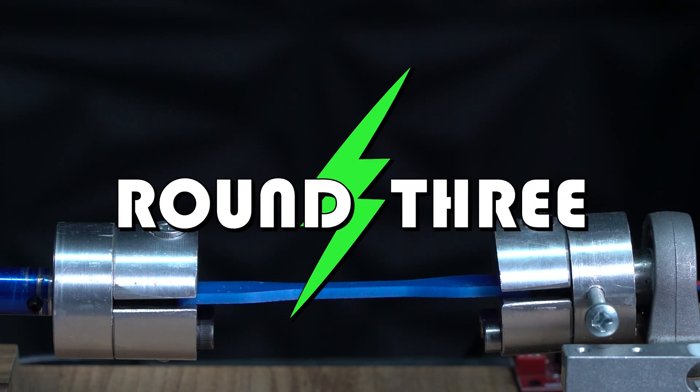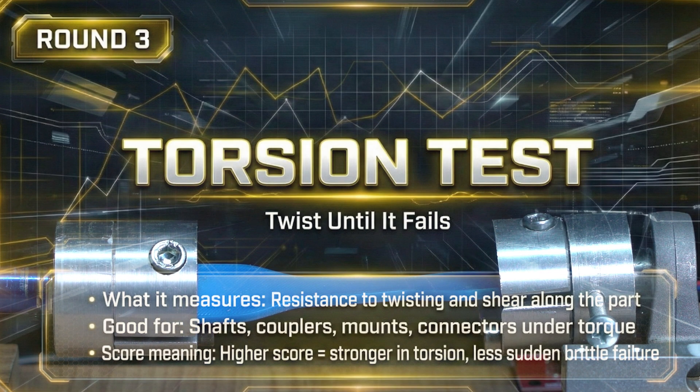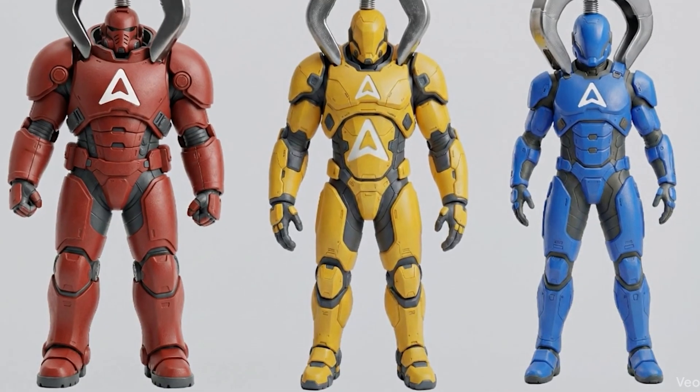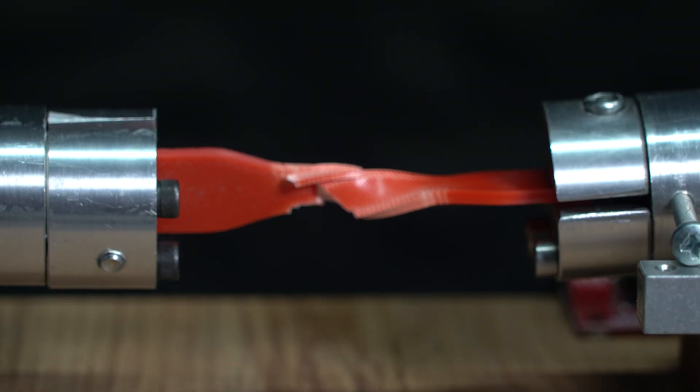And now, round 3, the torsion test. No hitting this time, just pure torture. We are going to wring them out like a wet towel until not a single drop is left. First up, ABS.